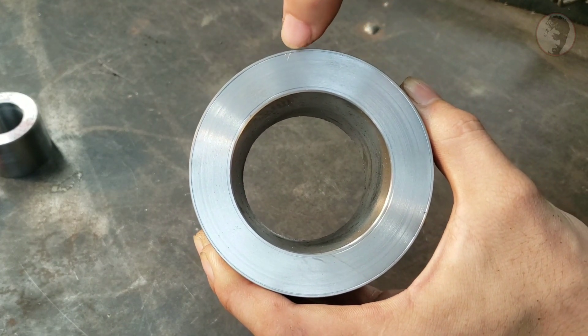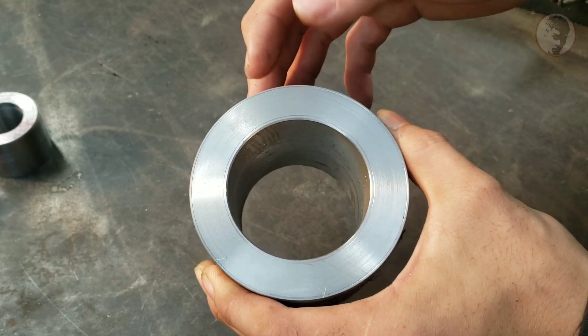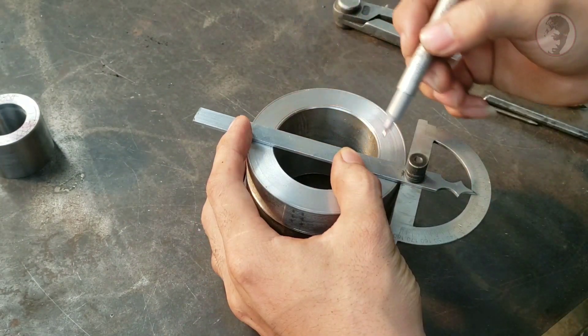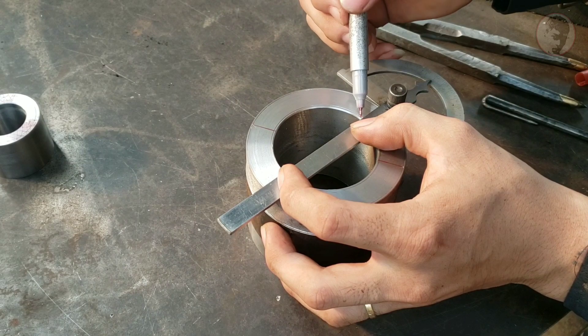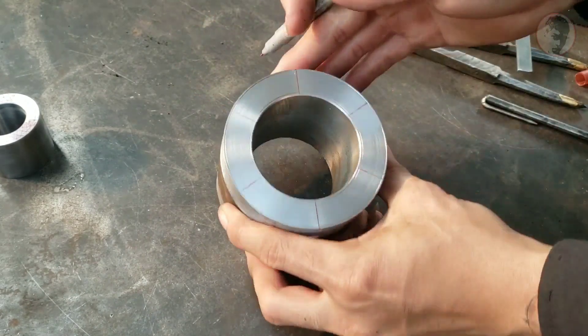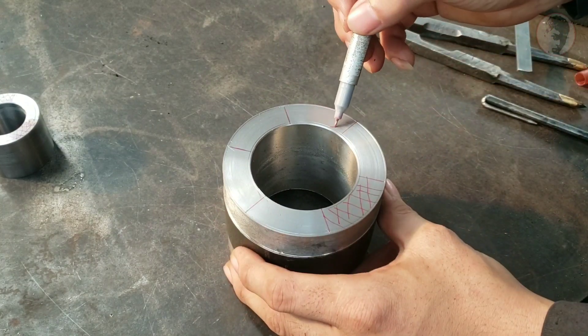Đây là ống tròn mình đã tiện sẵn 2 vòng tâm trong và ngoài. Mình cũng chia mặt trên của ống tròn thành 6 điểm trên vòng tâm và kẻ các đường thẳng đi qua nhau. Như vậy ống tròn đã được chia thành 6 phần đều nhau và mình chỉ cần phai 3 phần không liên tiếp sẽ tạo ra được biên dạng khớp nối 3 răng.